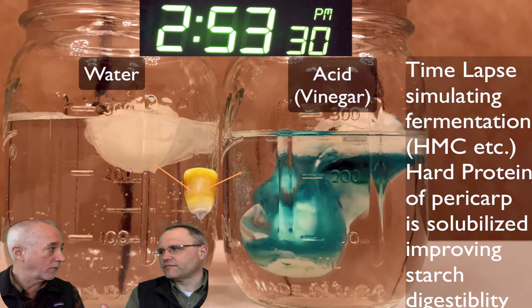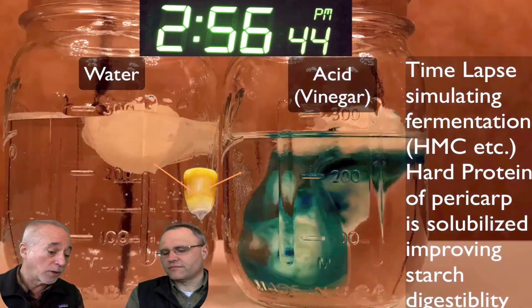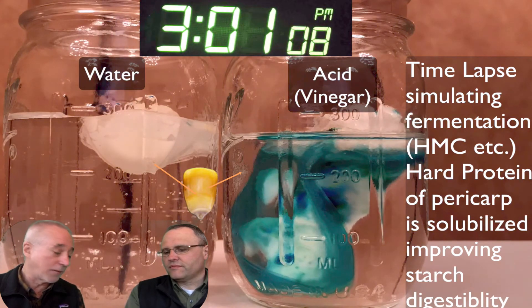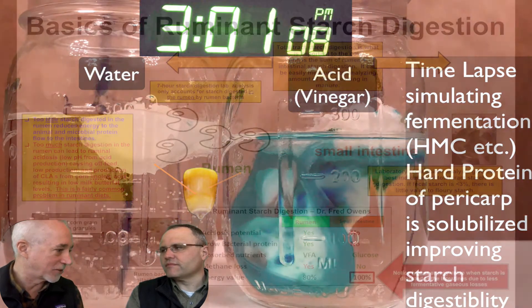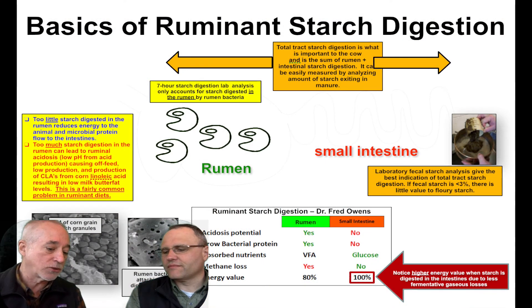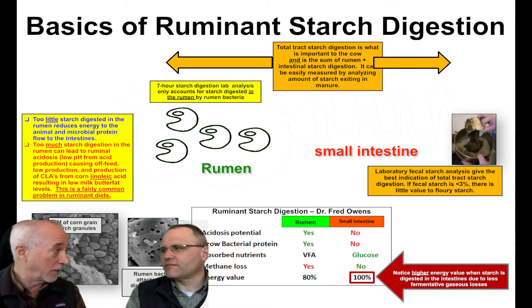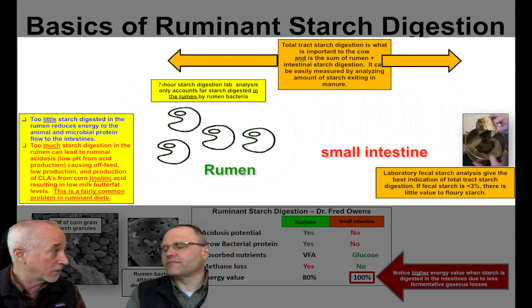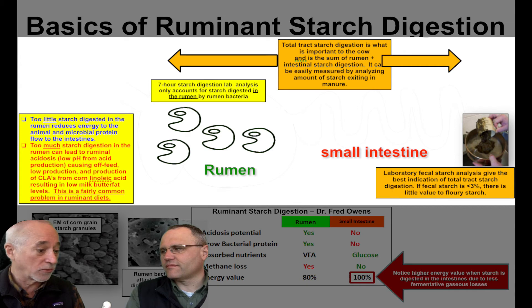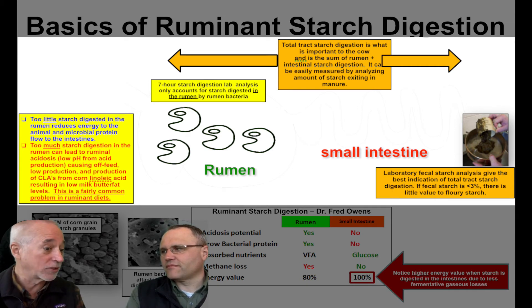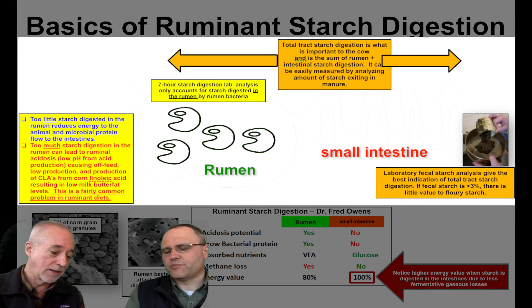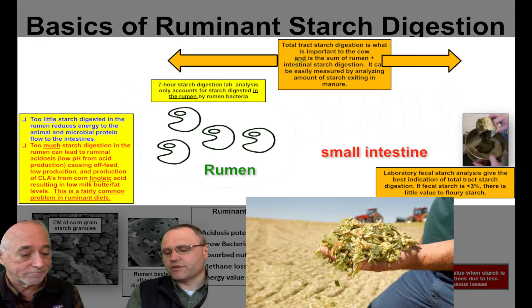If you really want to know if you have a problem, analyze for fecal starch. If we've got less than three percent starch in the manure, we know we've had really good digestion. One of my fears with the very flowery material they're talking about — and again I don't think there are big differences — is that those claiming it may not realize that if we have too much starch digested in the rumen, we're going to cause subclinical acidosis and component problems. The intestine is actually a very efficient place for starch digestion as well.